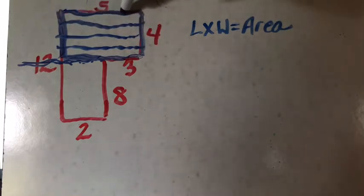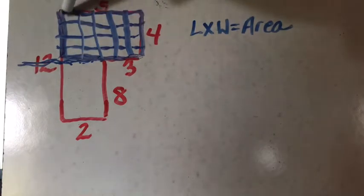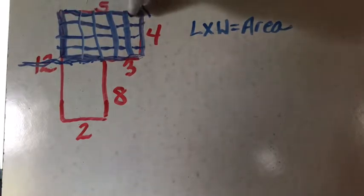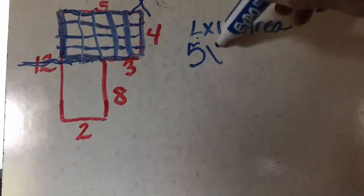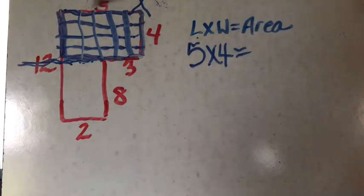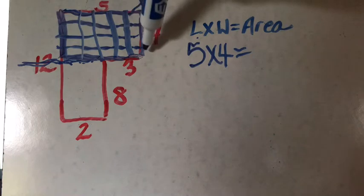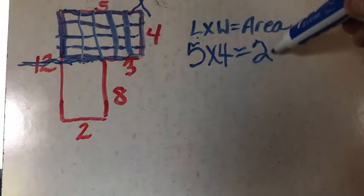I need five going across the top. One, two, three, four, five. So five times four gives me the area of the first rectangle. And I can count five, 10, 15, 20. Five times four equals 20 square units.